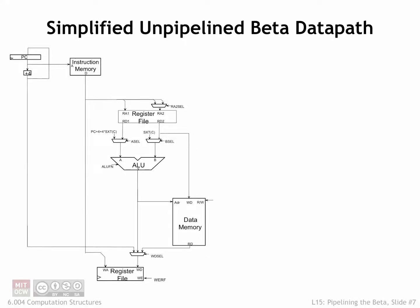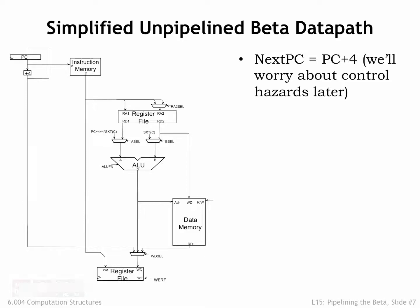Let's start by redrawing and simplifying the beta datapath so that it will be easier to reason about when we add pipelining. The first simplification is to focus on sequential execution and leave out the branch addressing and PCMux logic. Our simplified beta always executes the next instruction from PCPlus4. We'll add back the branch and jump logic when we discuss control hazards.